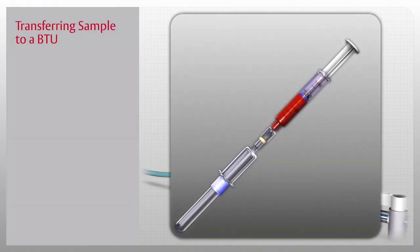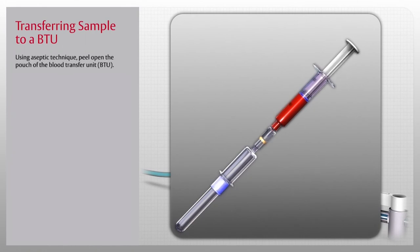To transfer the blood sample from the syringe to vacuum tubes, use the blood transfer unit, or BTU. Using aseptic technique, peel open the pouch.